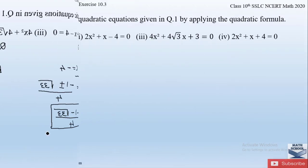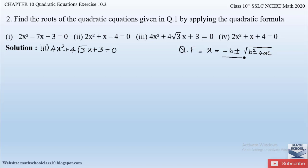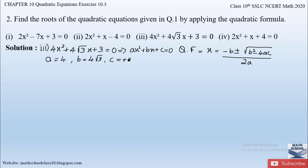The third part of question 2 is the equation 4x² + 4√3x + 3 = 0. We apply the quadratic formula x = (-b ± √(b² - 4ac)) / 2a. Comparing with the standard form ax² + bx + c = 0, we get a = 4, b = 4√3, and c = 3.